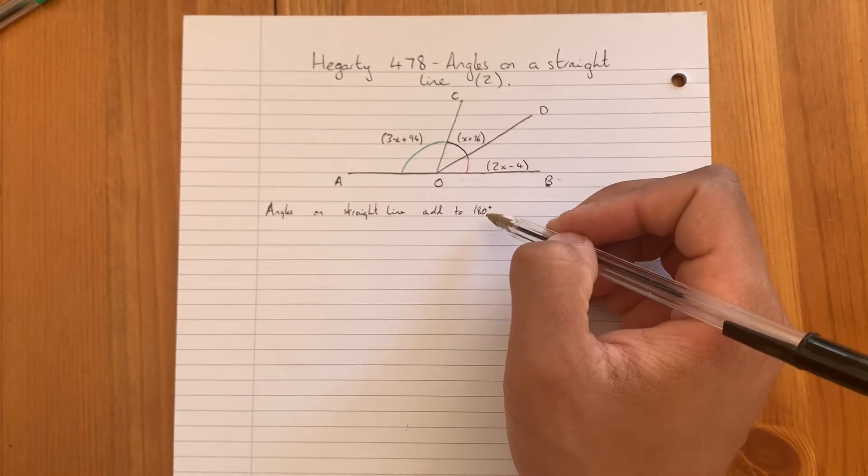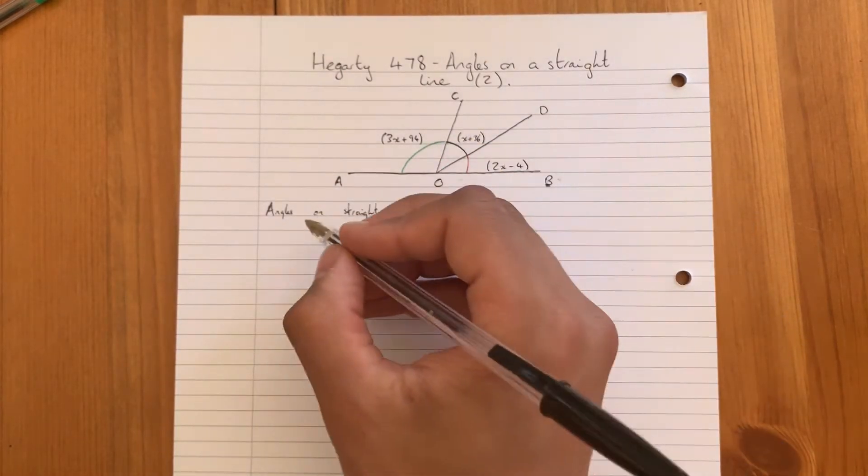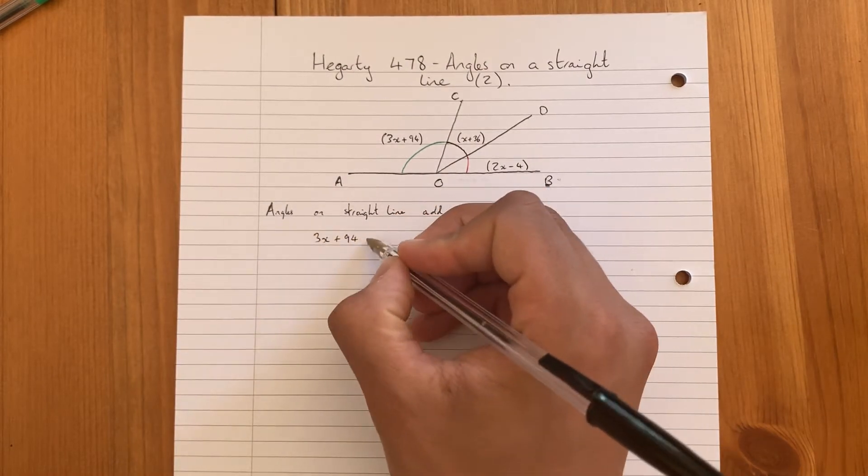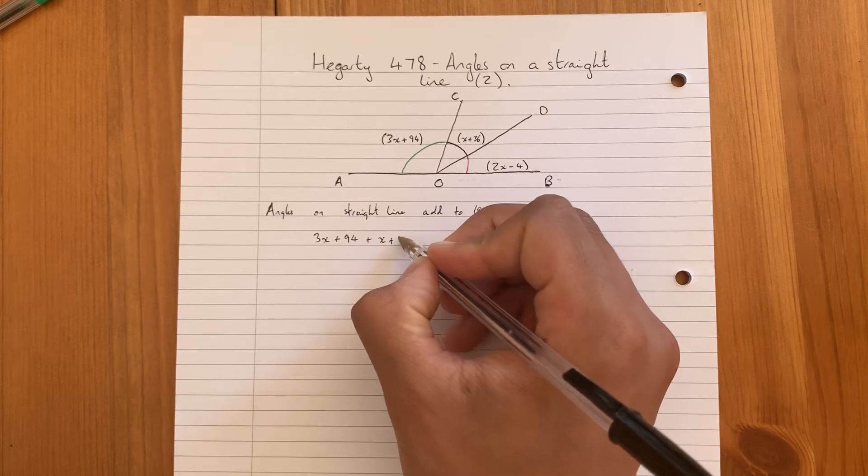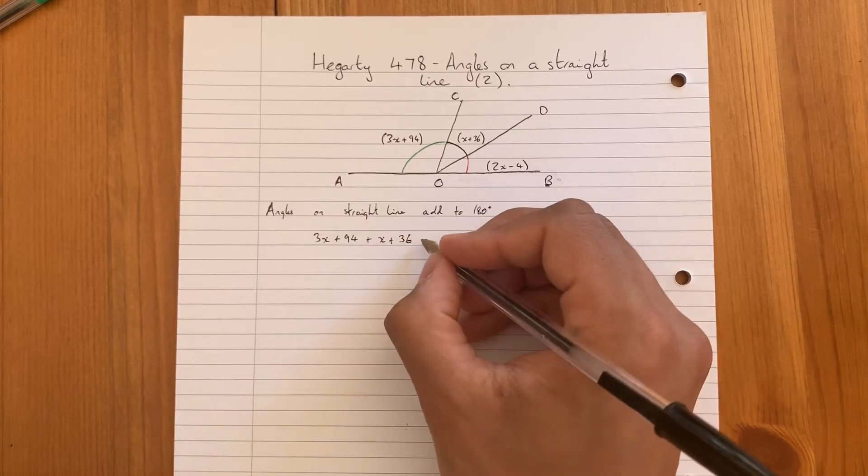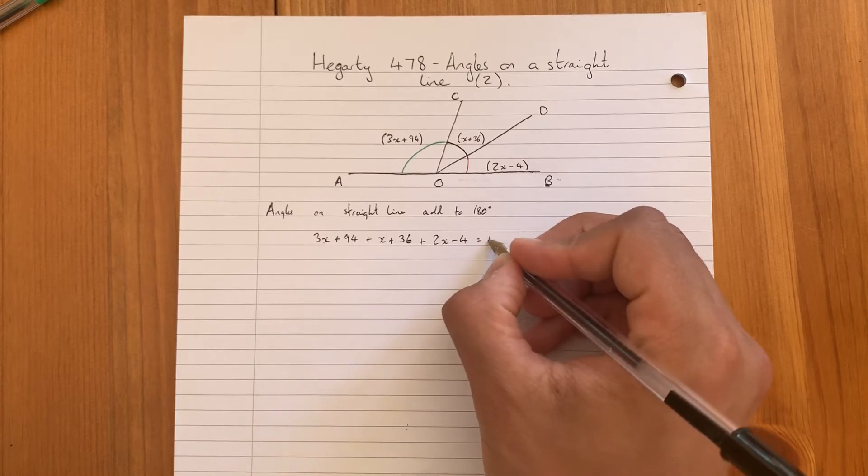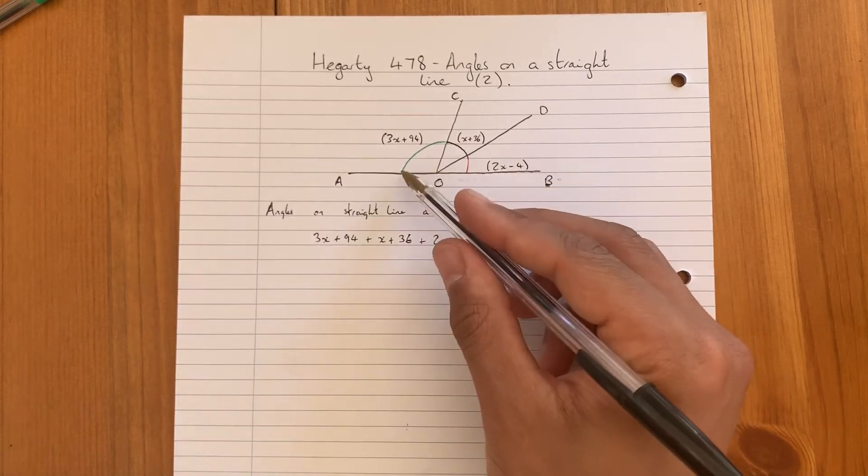Now the green angle is 3x plus 94, plus the black angle x plus 36, plus the red angle 2x minus 4. As we just said, this must equal 180 because all of them together must equal 180 as they're on a straight line.